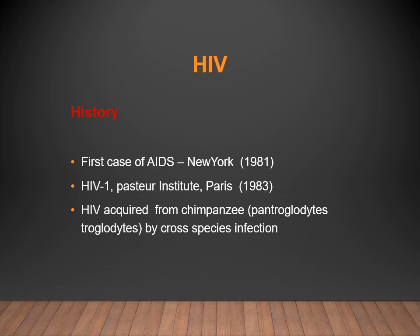About the history of HIV — the first case came to notice in 1981 in New York. In 1983, HIV was identified by the Pasteur Institute, Paris. It has been seen that HIV was acquired from the chimpanzee, which carries the Simian Immunodeficiency Virus.